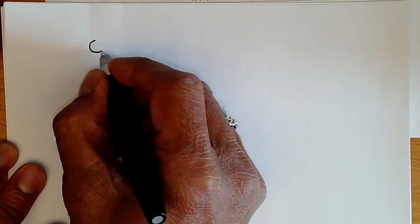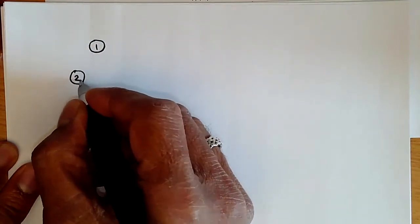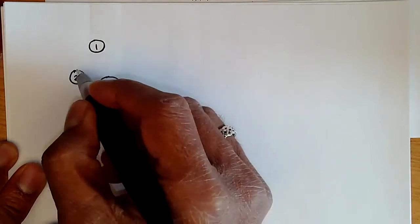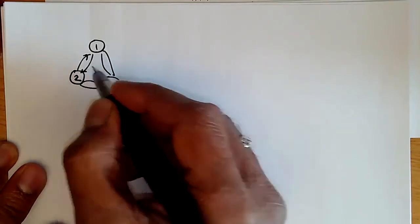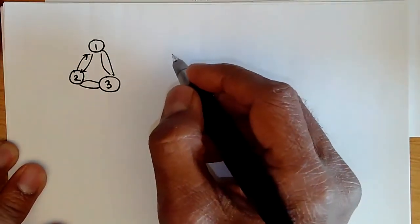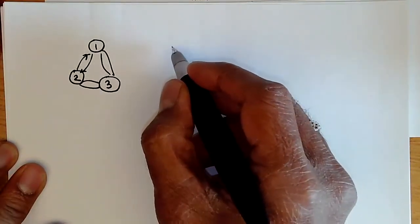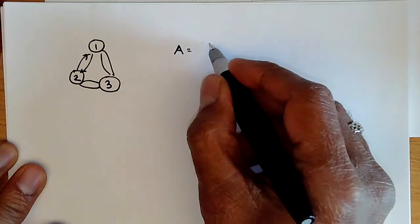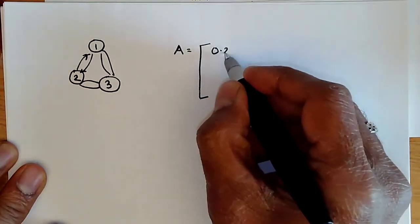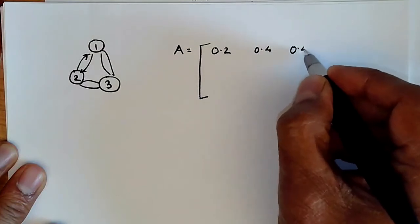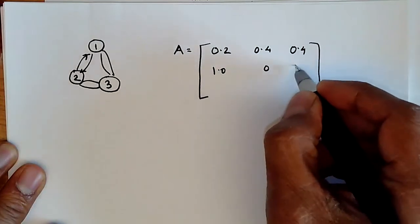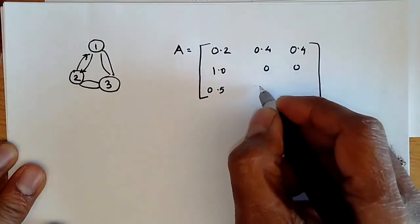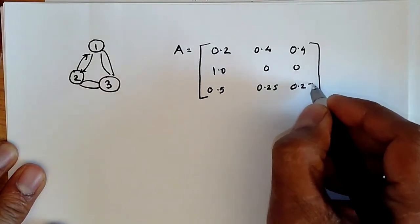Consider a Markov process that has three states like before: state 1, state 2, and state 3, which has certain transitions amongst themselves. And let us consider the state representation in the matrix form, as we talked about before. So the matrix A, I'll write it out again: 0.2, 0.4, 0.4, 1.0, 0, 0, 0, 0.5, 0.25, 0.25.